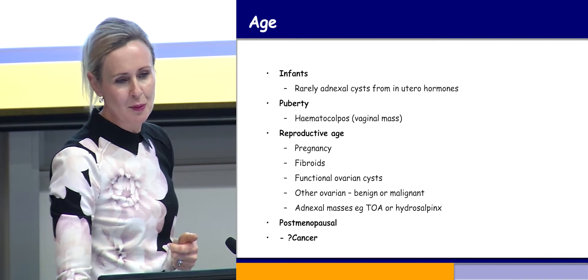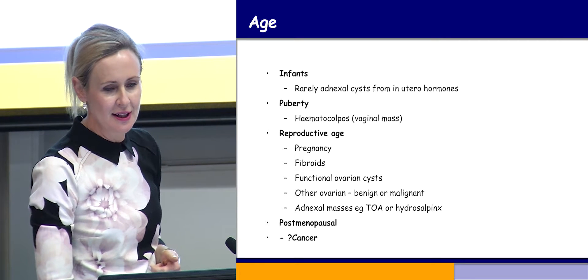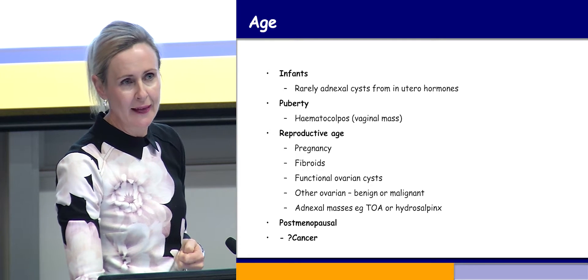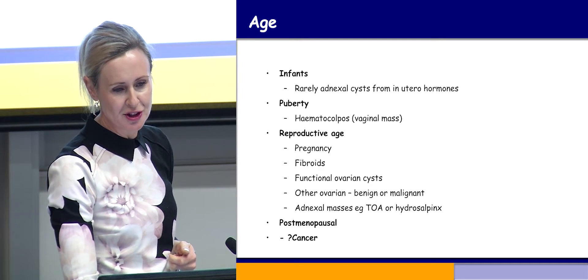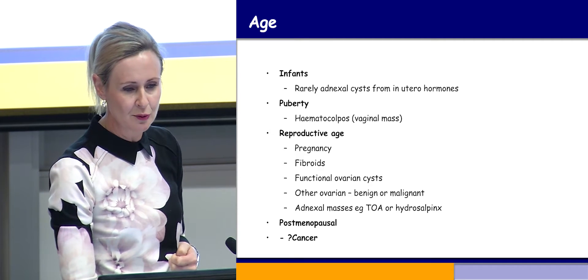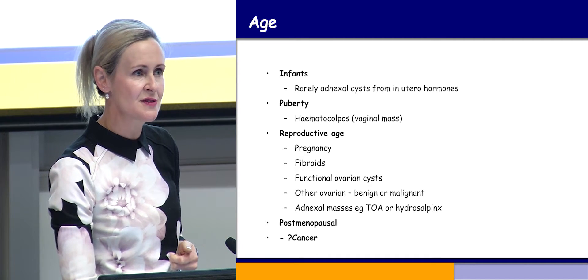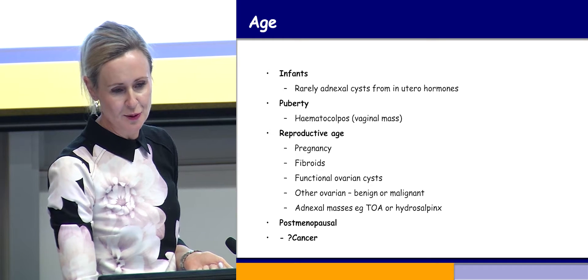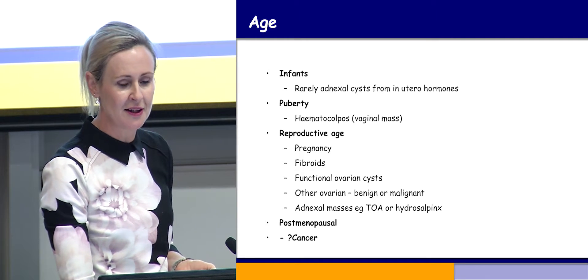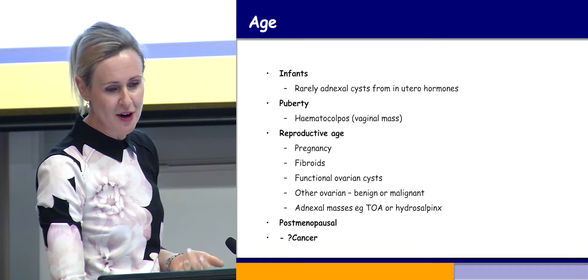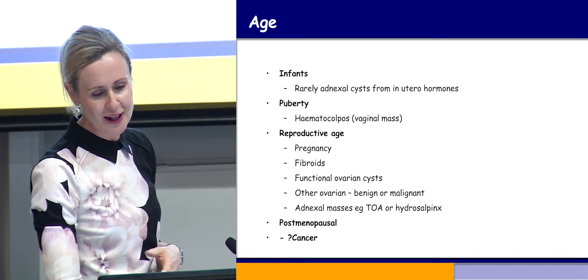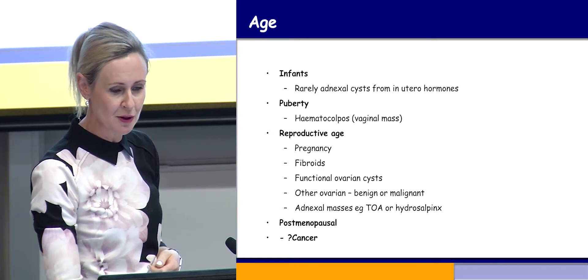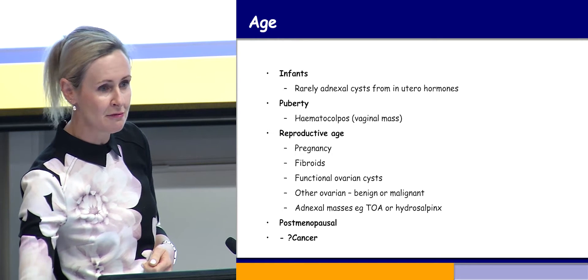Pelvic masses can also be divided up by age. In an infant, you can occasionally get adnexal cysts from in utero hormones. In puberty, we sometimes see a vaginal mass with pelvic pain on ultrasound, which can be a haematocolpos from an imperforate hymen — a young adolescent with late onset of menarche and cyclical pain. In reproductive age, common ones are pregnancy, fibroids, functional ovarian cysts, and other ovarian masses benign or malignant, or infections. In the postmenopausal group, cancer needs to be ruled out.